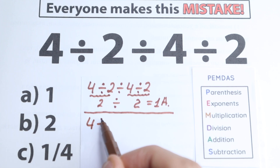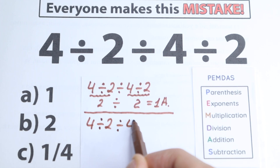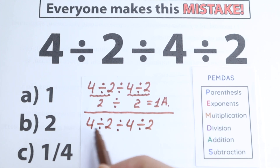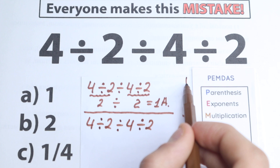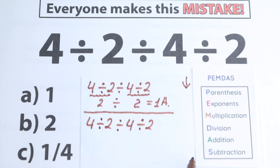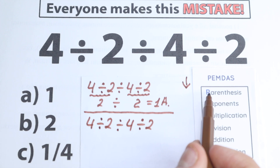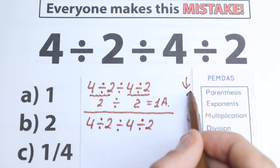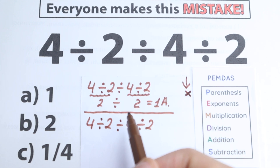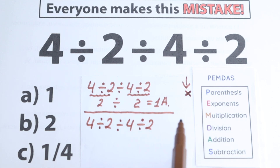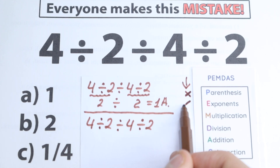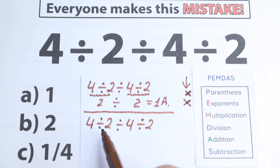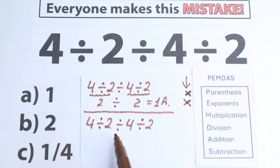So we have 4 divided by 2, divided by 4, divided by 2. PEMDAS works from the top to the bottom, going through each step. First: parentheses — we don't have any, so we skip this step. Next: exponents — we don't have any squares or cubes, only regular integers, so we skip this step too. With parentheses and exponents this question would be more complicated, but we don't have them.